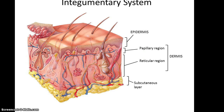The integumentary system is composed of three main layers: the epidermis, the dermis, and the subcutaneous layer. The epidermis and dermis together form the skin. The dermis is broken down into two subregions — the papillary region, which is more superficial, and the reticular region.